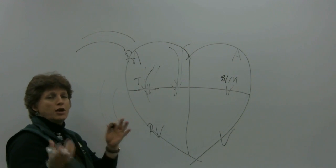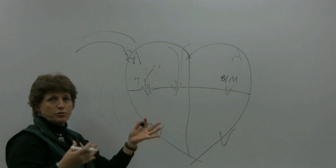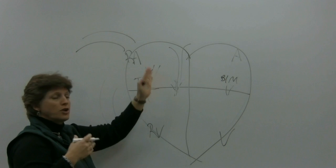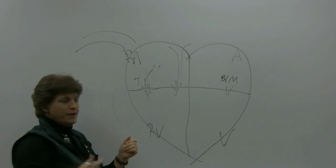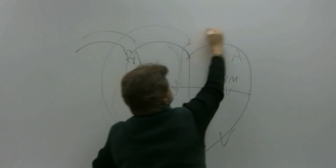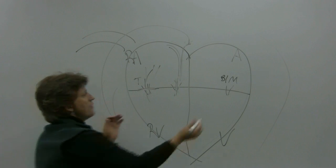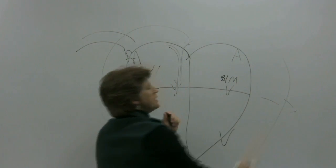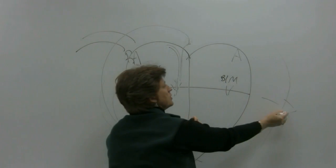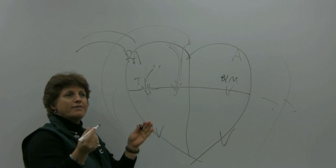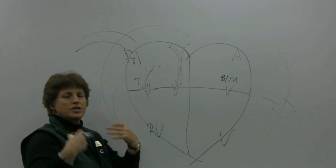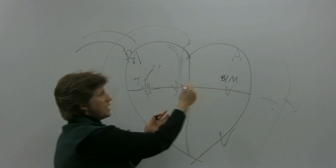Usually oxygenated blood is carried through the arteries, but until it goes to the lungs, the pulmonary artery carries the unoxygenated blood. It goes through the pulmonary artery to both the right and left sides of the lungs. In the lungs, a gas exchange takes place in the little alveoli — oxygen is taken in and carbon dioxide is blown out — so the blood now has rich oxygenated blood.